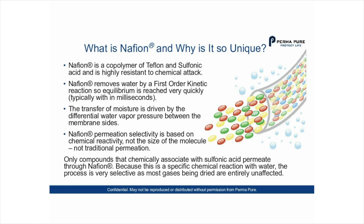Nafion permeation selectivity is based upon chemical reactivity, not the size of the molecule — it's not traditional permeation. There on the right, you can see a diagram of a sample gas stream moving through the Nafion tubing. The yellow, red, and green jelly beans represent the chemicals being analyzed or wanting to be retained in the sample, and the blue represents the water being removed from that gas stream in the vapor phase. The way we like to look at it is to take an example of a bug screen, which has holes where only certain molecules can move through — that's traditional permeation.